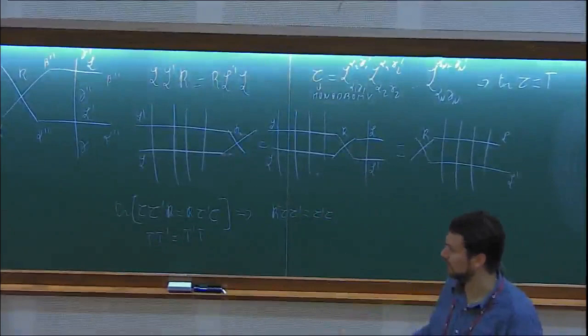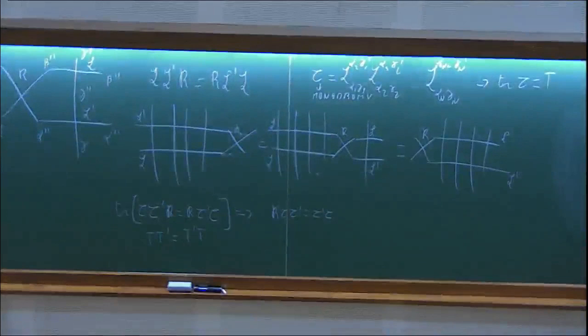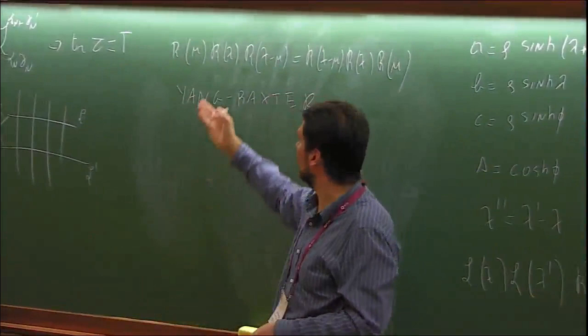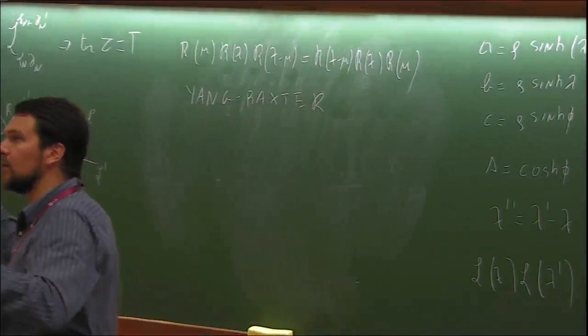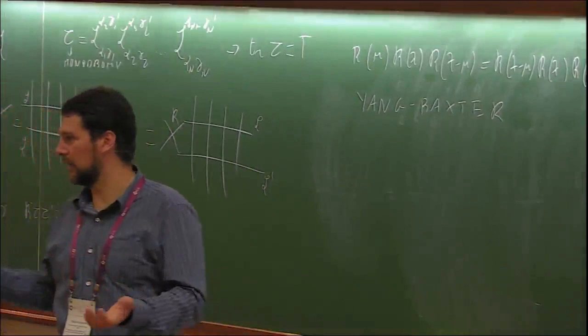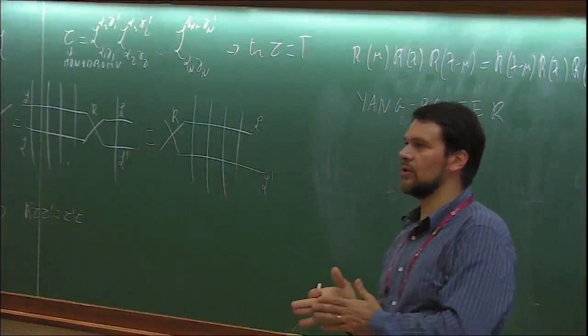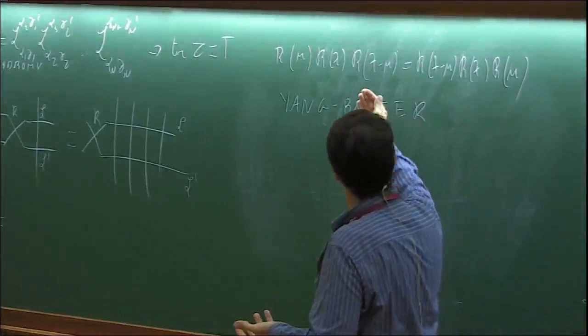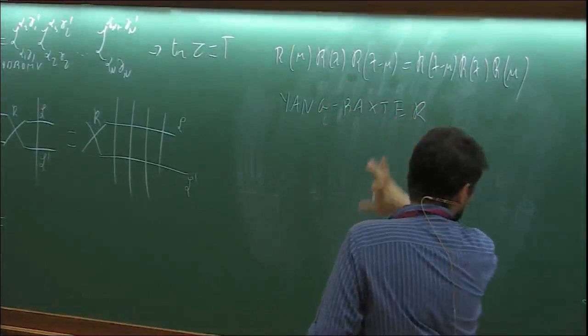What you normally do is find solutions or representations of the Yang-Baxter equation by considering the R matrix acting on different spaces — here it acts on two copies of the same two-dimensional space, but you can use three-dimensional, four-dimensional, etc. This has a symmetry of conservation of arrows. You can try to change this symmetry, impose some constraint and some space, and look for a solution.